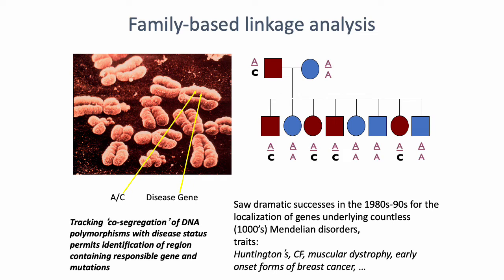In linkage analysis, you have access to a pedigree and at least different markers or SNPs. The idea broadly is that you are looking for co-segregation of both a genetic marker and disease status through a pedigree. The stronger the co-occurrence of a genetic variant with a phenotype, the stronger the link between that particular genetic variant and that phenotype.